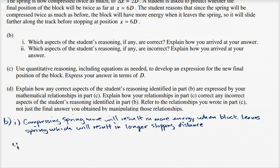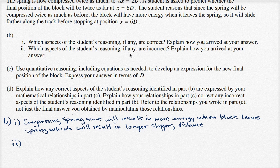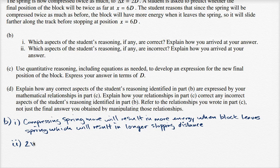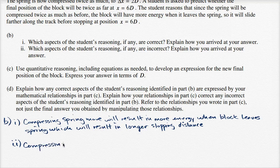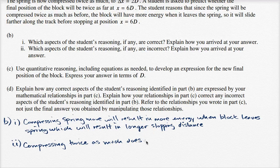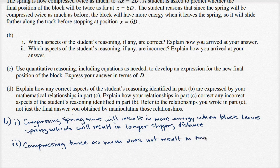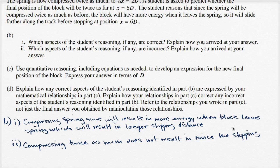Now part two. Which aspect of the student's reasoning, if any, are incorrect? Explain how you arrive at your answer. Well, I could say compressing twice as much does not result in exactly twice the stopping distance.